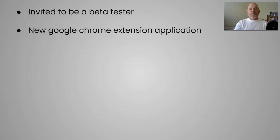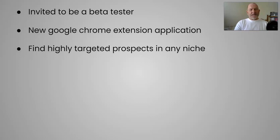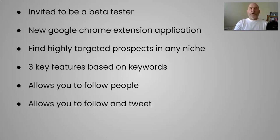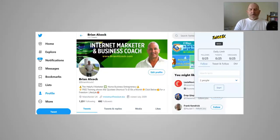All you do is download the software, connect it up with Google Chrome with a few clicks, and the software runs seamlessly with your Twitter account. It will find you highly targeted prospects for your business in any niche using three key features based on keywords — it allows you to follow people, follow and tweet people, and direct message people. However, I would recommend you don't direct message people with spammy links. You need to build rapport with your prospects and try to help them to get the best results.